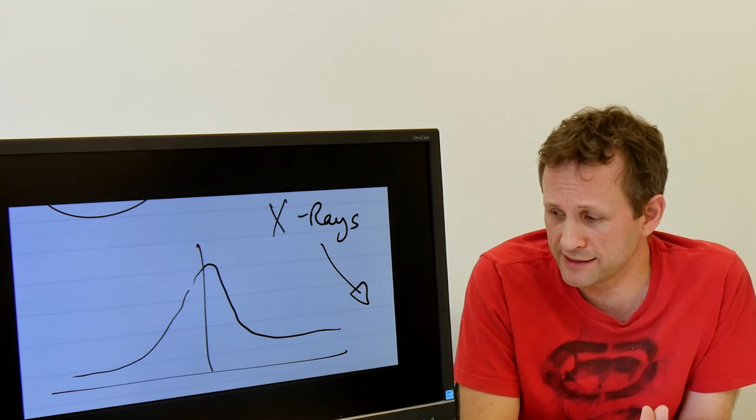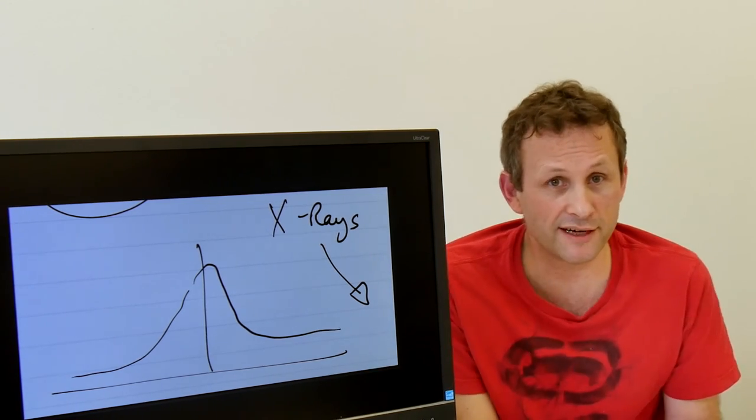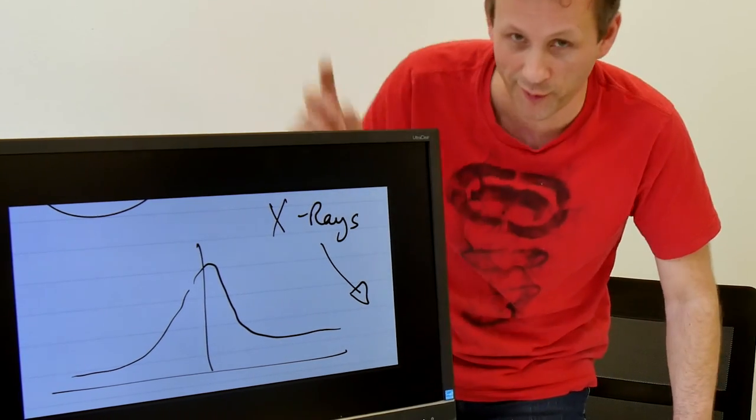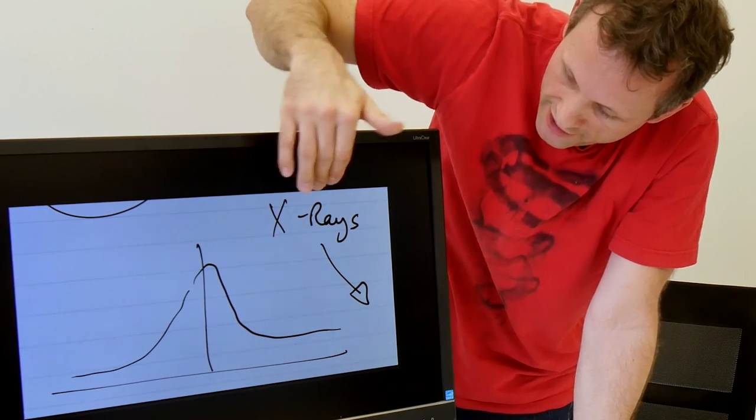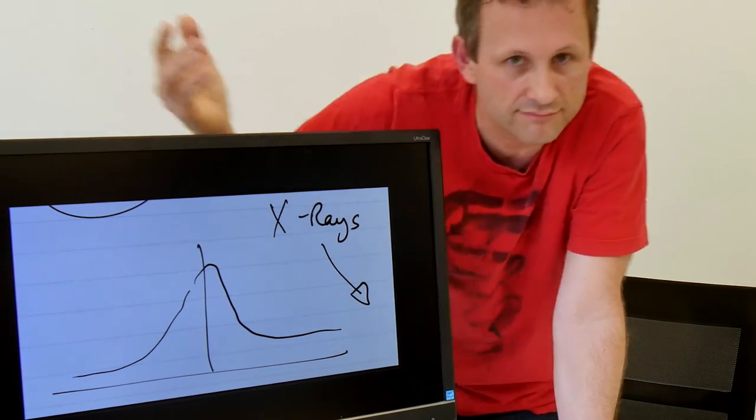I came across this drawing that I made. So there we have it - we have something that looks a bit like bremsstrahlung. I don't know what's going on on the left, did I really mean that? I don't know. But here we go, something looks a bit like bremsstrahlung and I've written x-rays there.